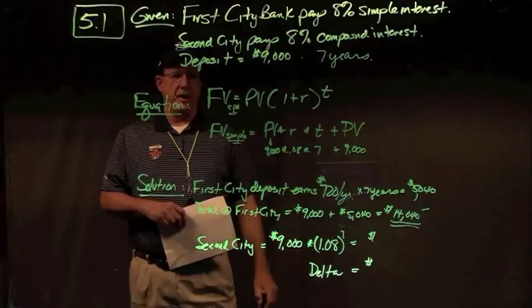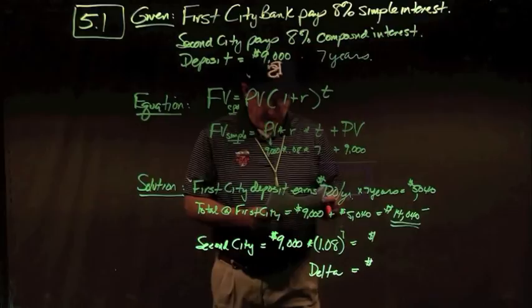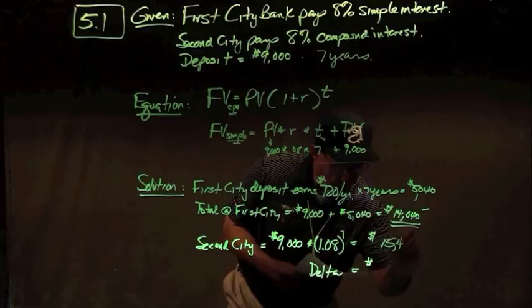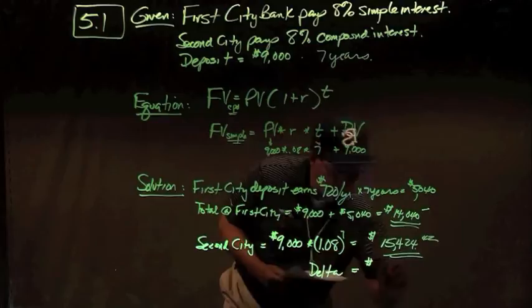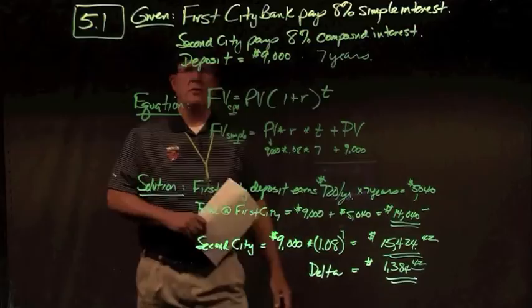In Second Citibank, where we have compounding — interest on interest — I take PV times (1 plus r) to the t: $9,000 times 1.08 to the seventh power. That gives $15,424.42. The delta improvement by investing at Second Citibank will be $1,384.42. That's your answer to problem 5.1.